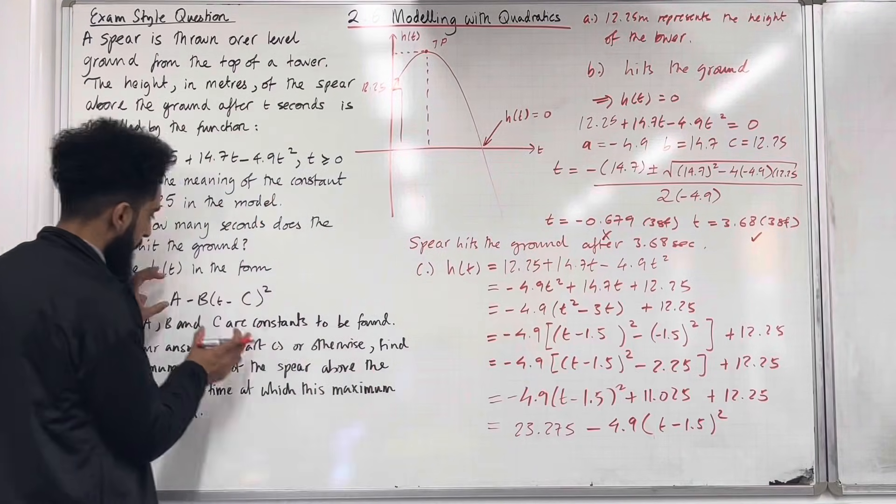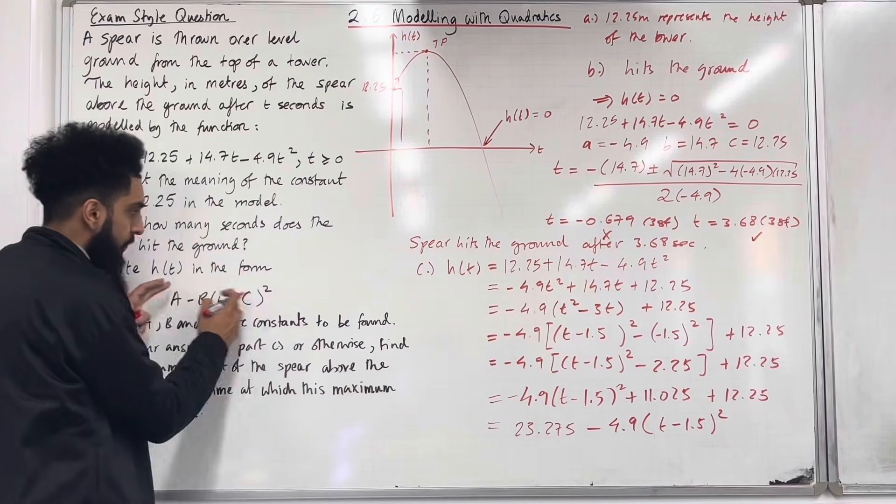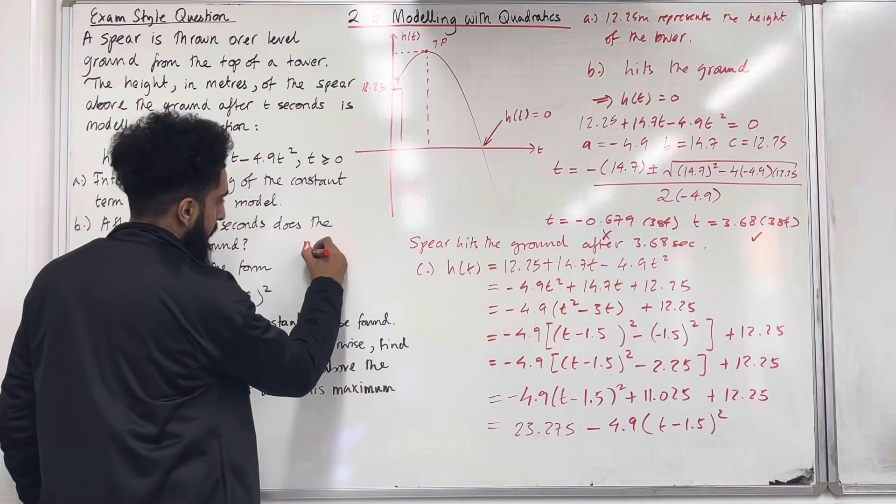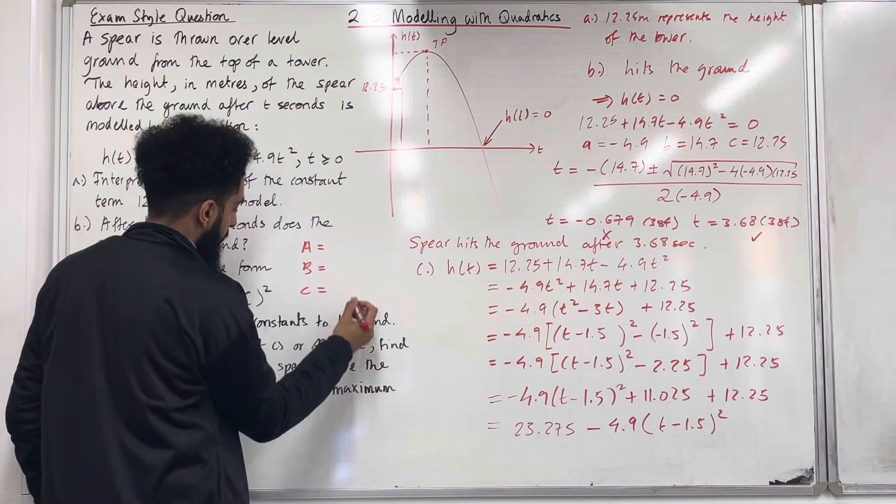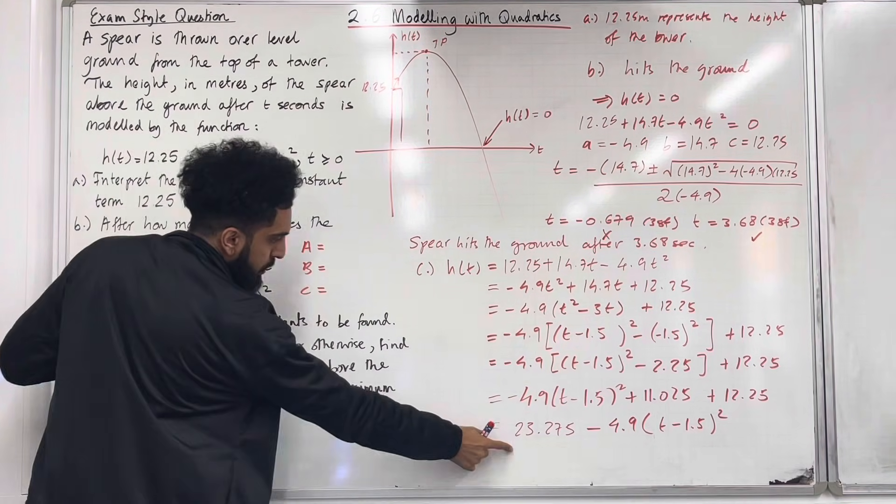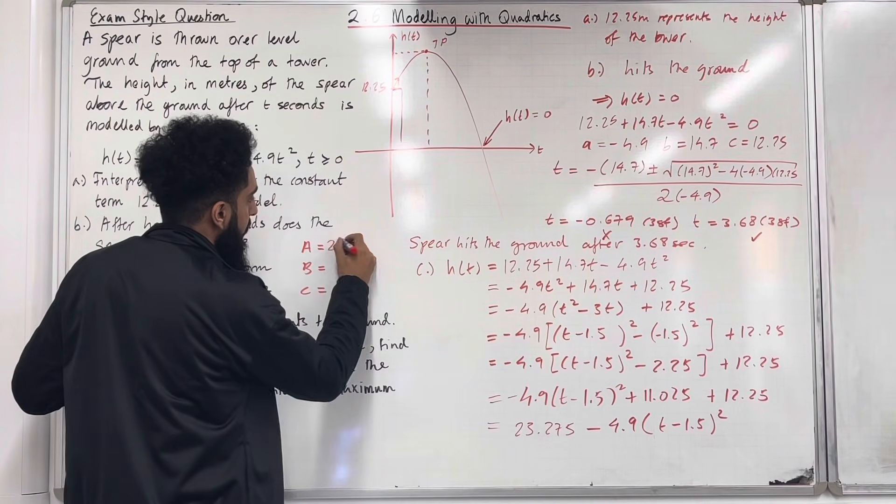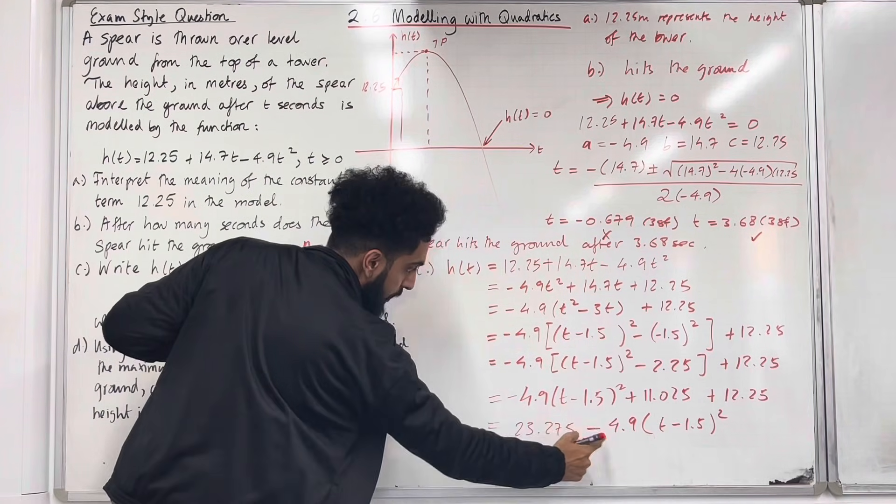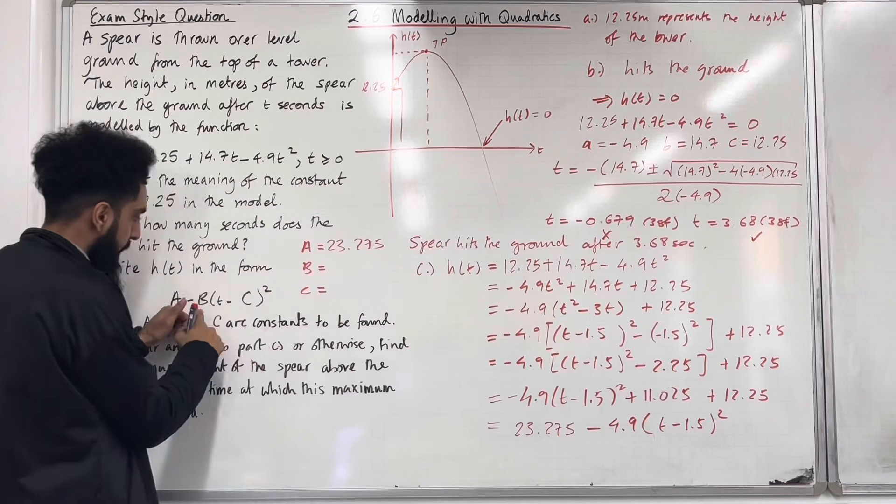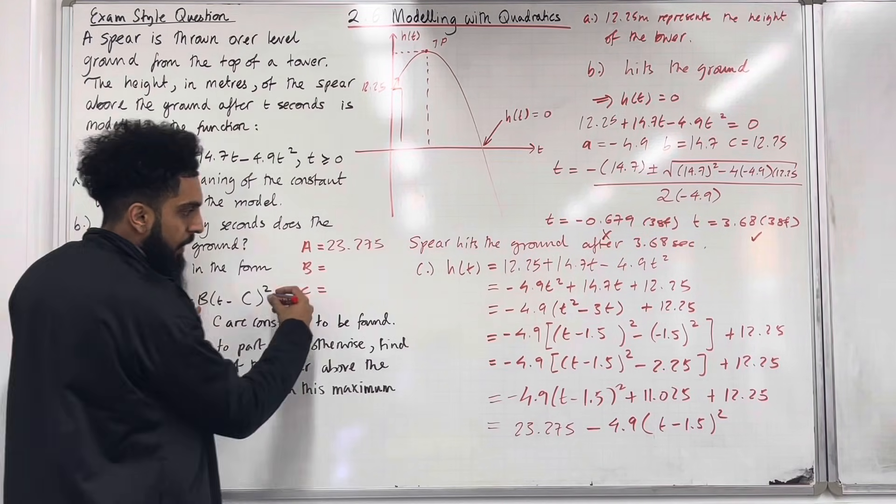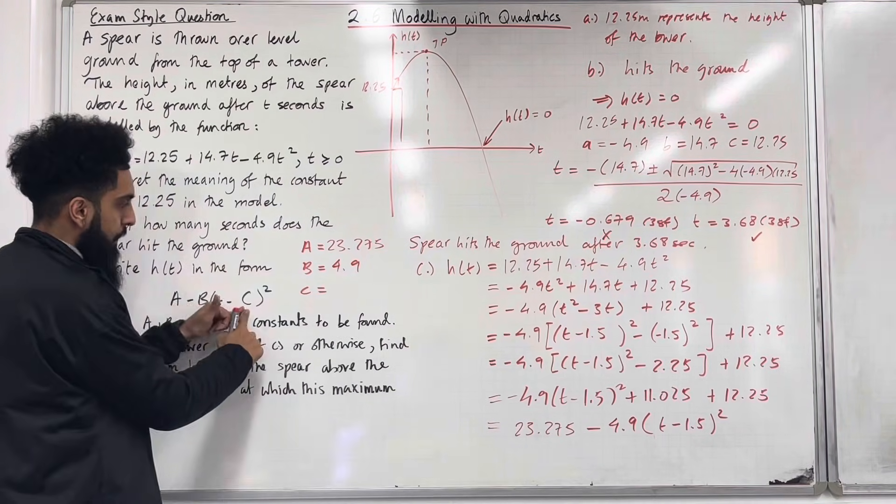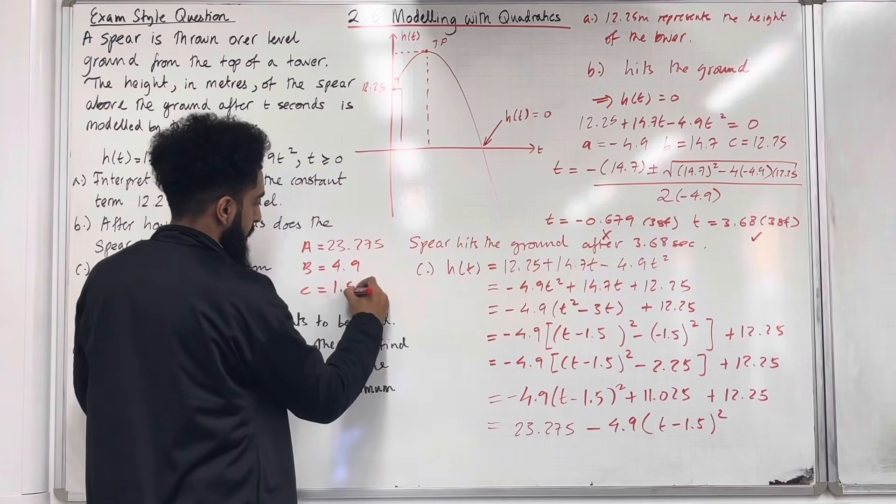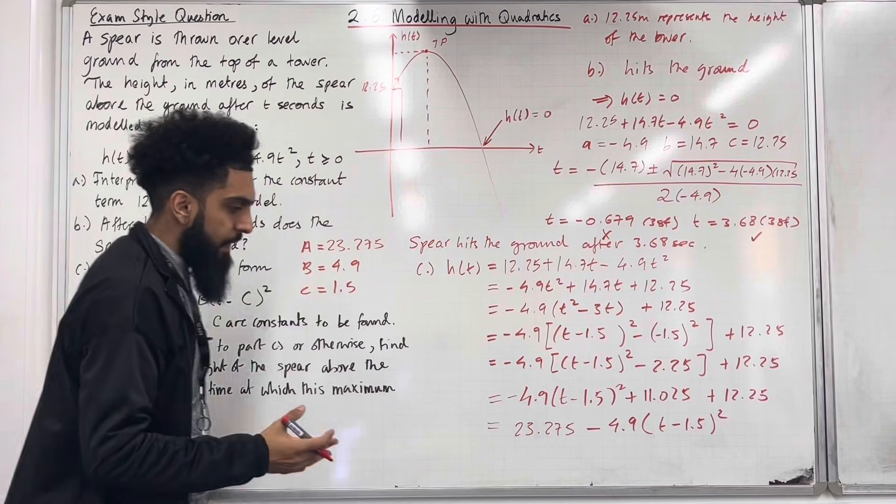So let's start comparing. This here is in this form as required. So what is the a, b and c? The a is going to be 23.275. The b is going to be 4.9 not minus 4.9. It is 4.9. We're looking at b not the negative. So 4.9. The c is going to be 1.5. And that there completes part C of the question.